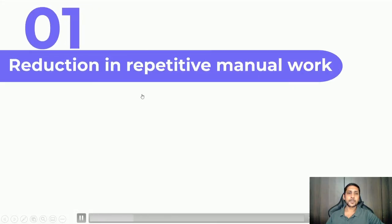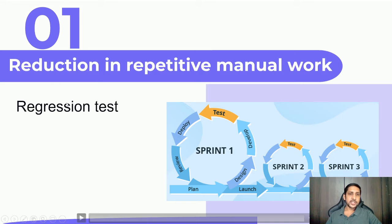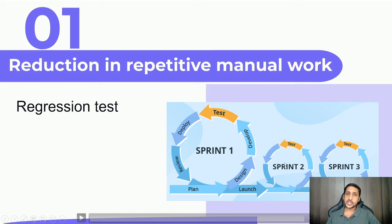The first benefit is reduction in repetitive manual work. Consider regression testing, especially in agile projects. We have different releases planned, and in each release testing is part of that release. We have to test the same test cases along with additional test cases. The developer only has to develop new features or fix bugs, but if we don't automate, we have to test previous features as well as new features.